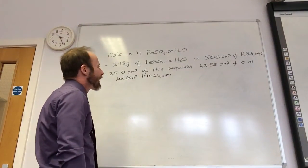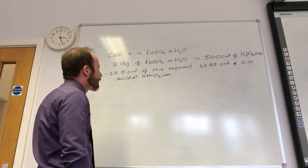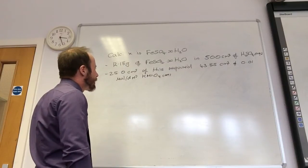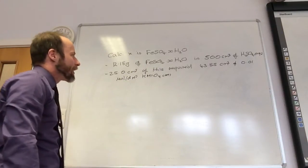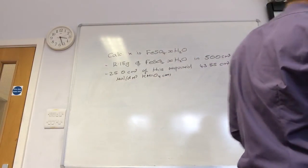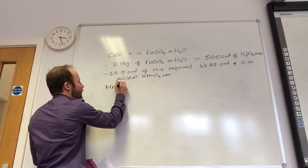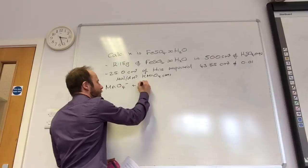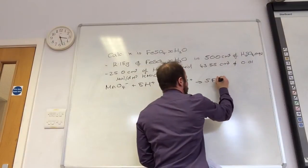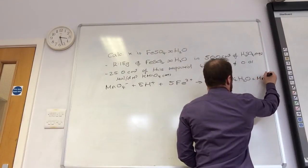Okay. So, another one. Calculating X in FeSO₄·XH₂O. They told me I've got 12.18 grams of this in 500 cm³ of sulfuric acid. So, 25 cm³ of this solution require 43.85 of 0.01 mole per dm³ potassium manganate. So, first thing I do is, well, let's write the equation that we all know.